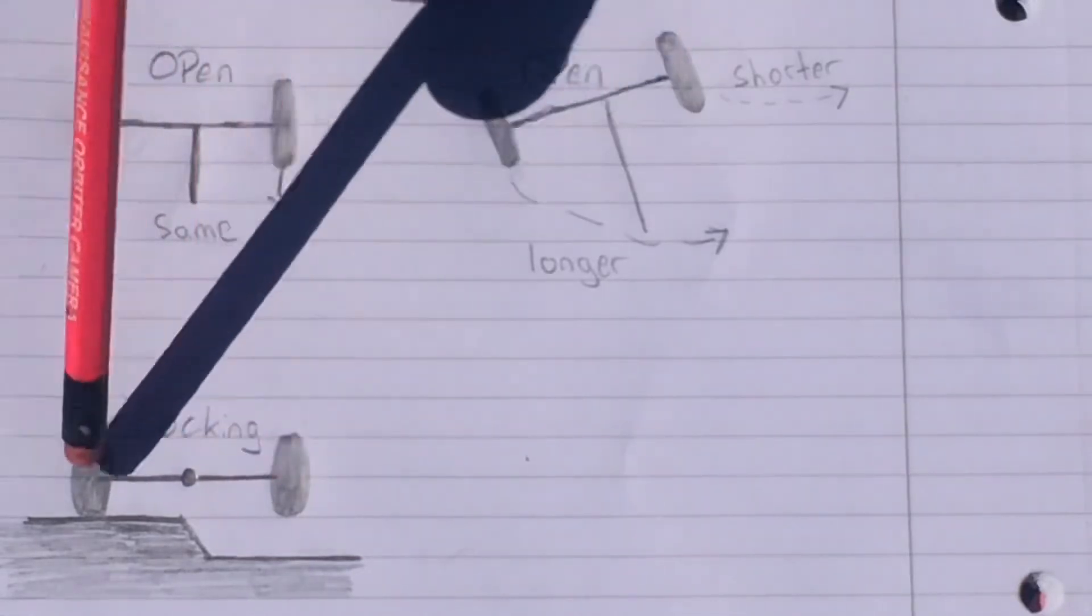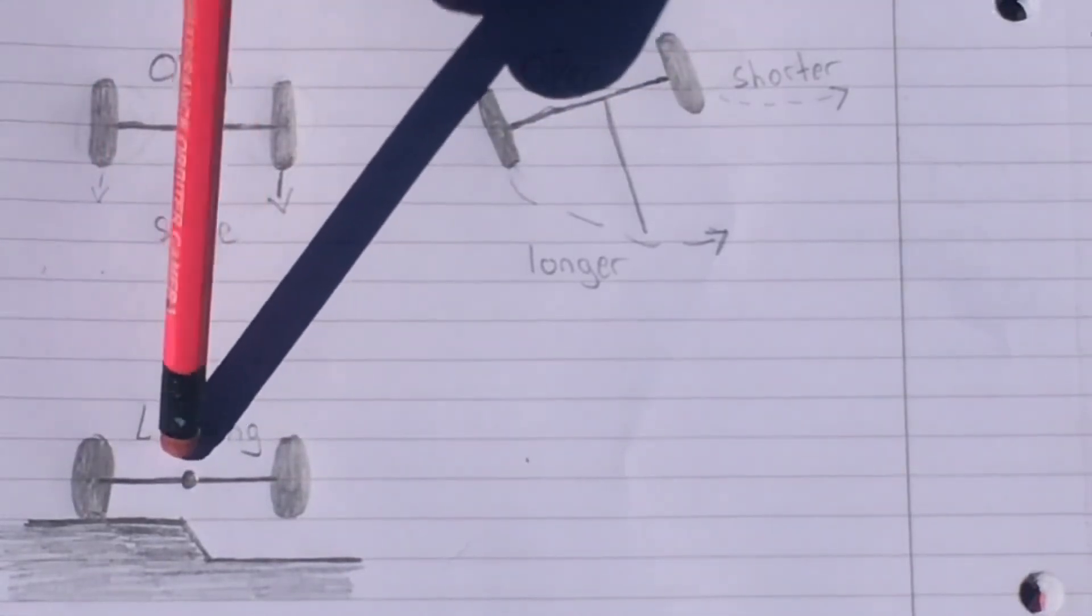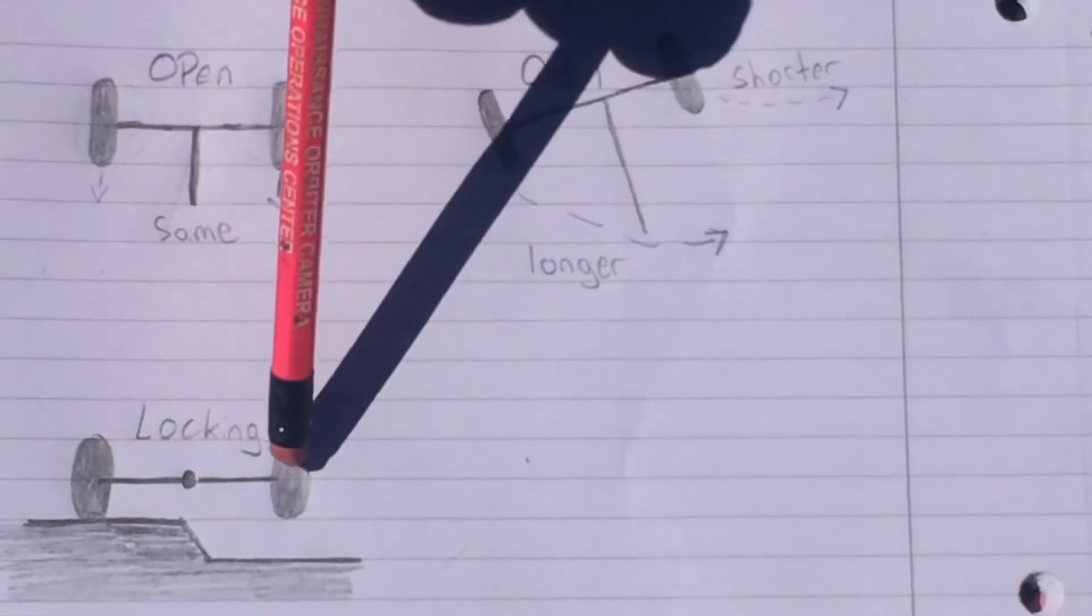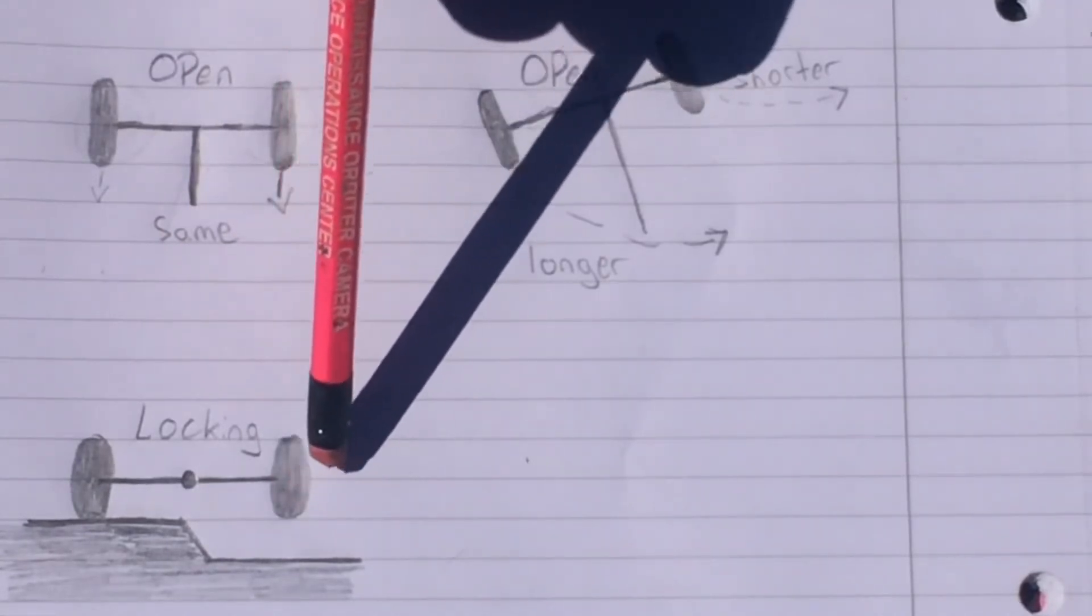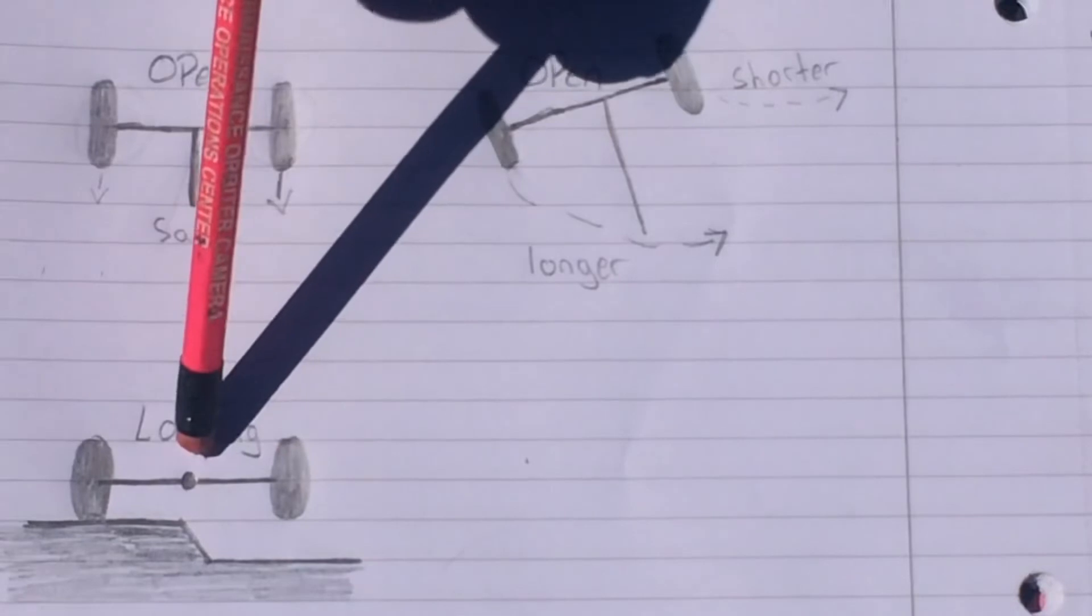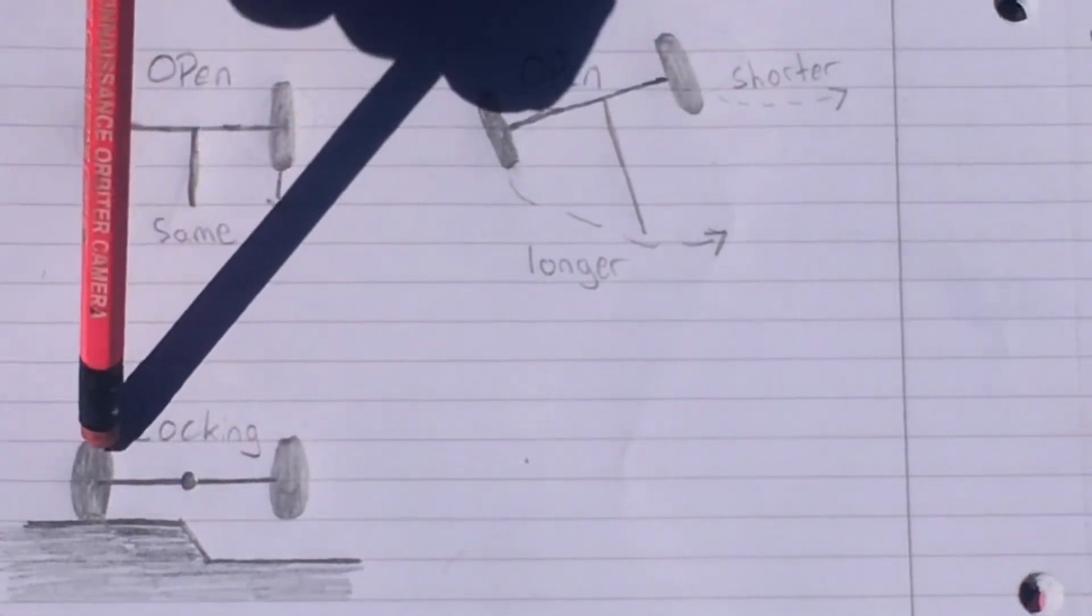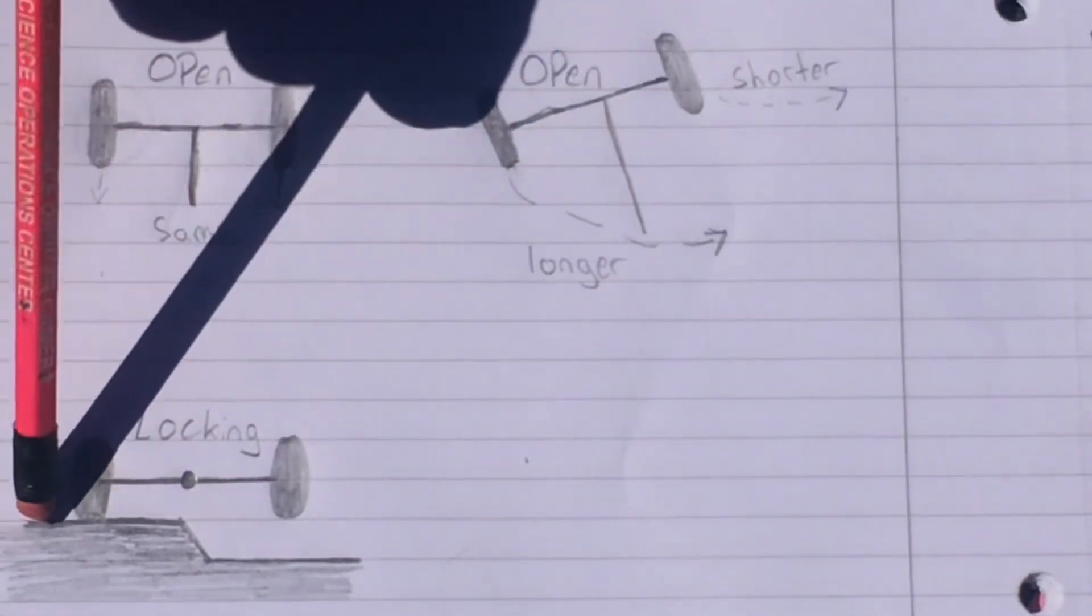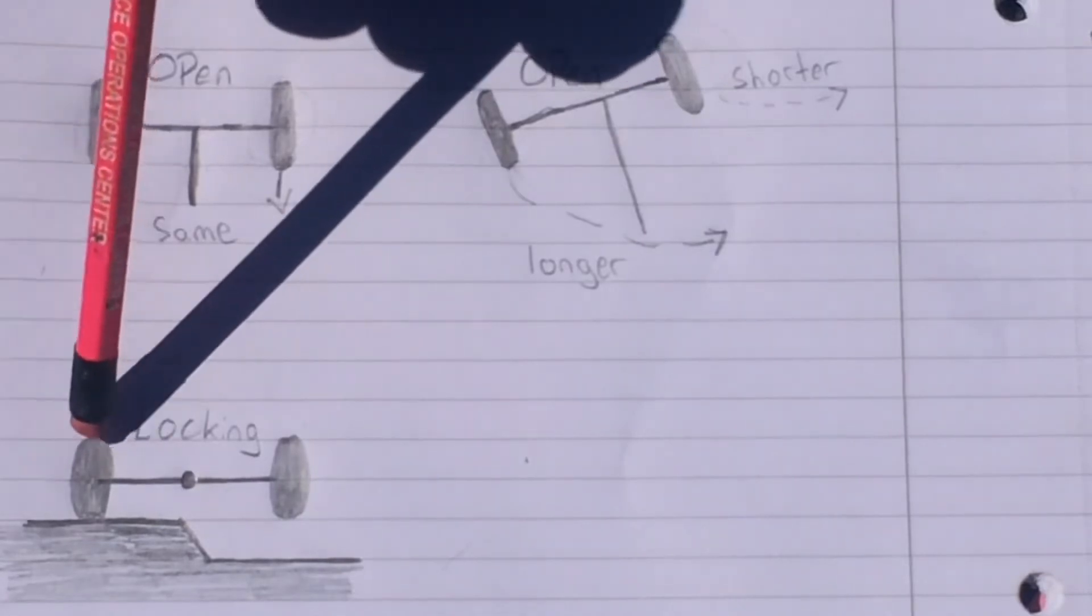Now if you turn the locking differential on, this wheel will actually stop spinning because there's no traction for that wheel to grab onto. So all that torque and power is going to be going to this wheel that does have traction on the ground, therefore it's going to allow you to get out of that situation.